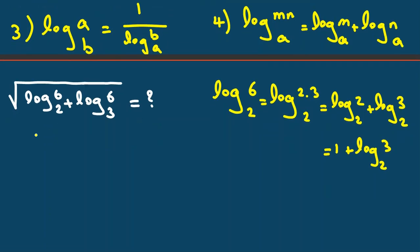So we say this part is 1 plus log base 2 of 3. If we do the same thing here, 6 again is 2 times 3. It is log base 3 of 2 plus log base 3 of 3. Log base 3 of 3 is 1 because 3 to the power of 1 is 3.